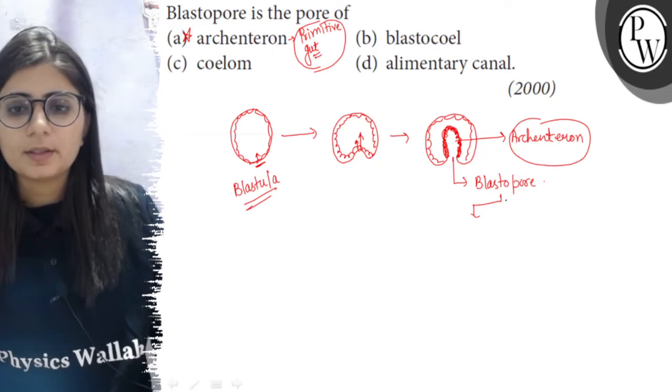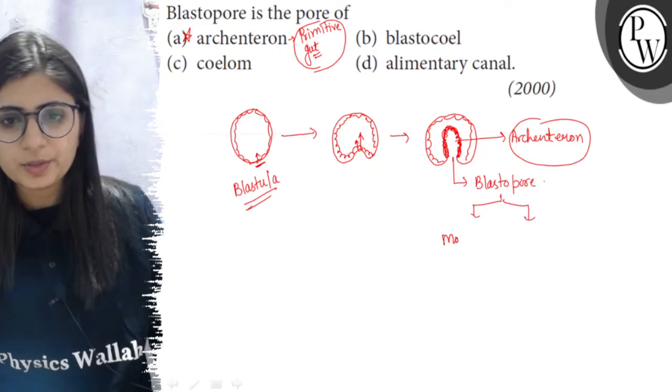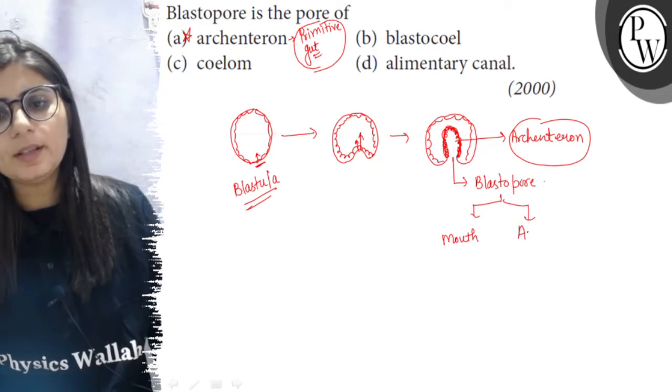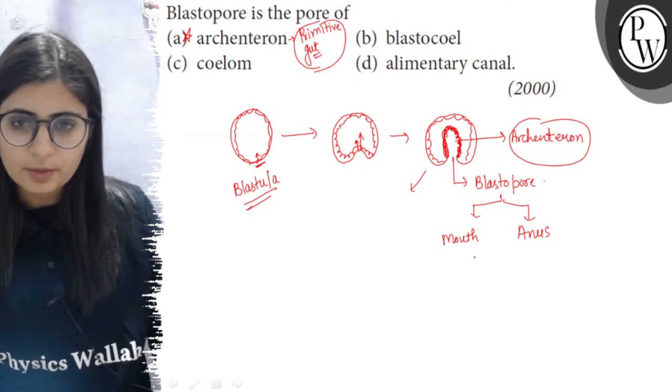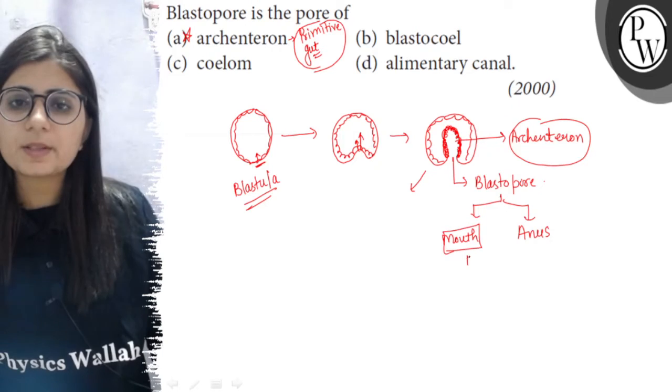This blastopore can form the mouth or it may form the anus, depending on the further development. If the blastopore forms the mouth,